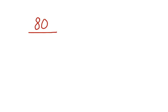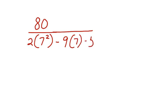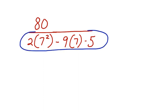Now I'm going to work with the denominator. We have 2 times 7 squared minus 9 times 7 minus 5 in the denominator. We're going to take this whole quantity and put it into the calculator. Again, the calculator will know to use the order of operations to solve it. So we get 80 in the numerator and 30 in the denominator.